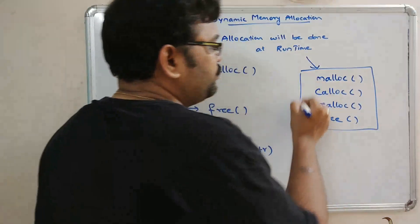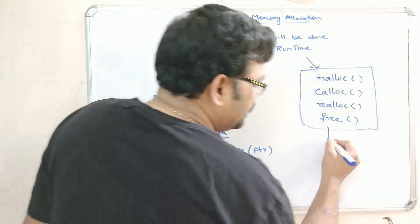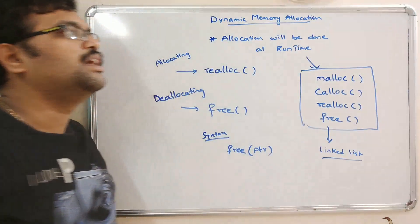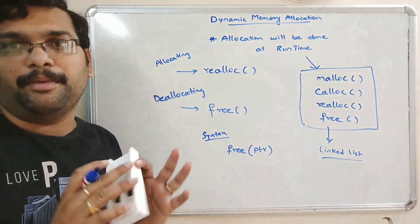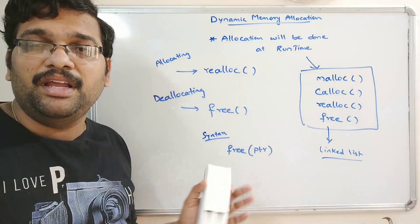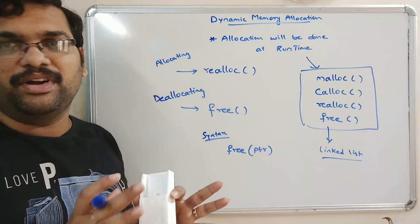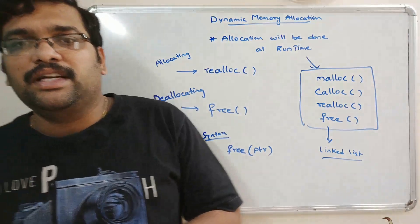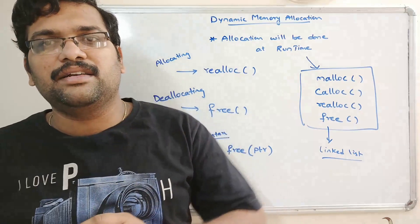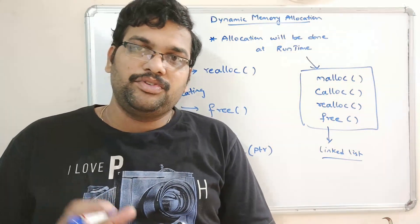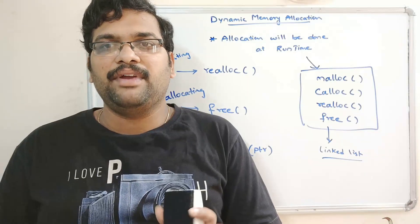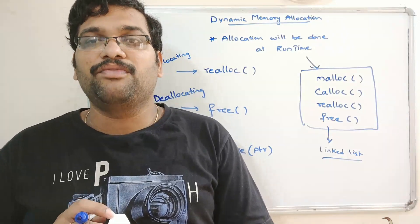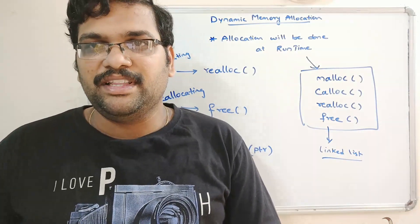These are the functions used in dynamic memory allocation. This is mainly used in data structures like linked lists in order to save memory — there is no wastage of memory and no chance of getting out-of-bounds exceptions. Hope you understood. If you have any doubts regarding dynamic memory allocation, feel free to post in the comment section. If you liked the session, share it with your friends and don't forget to subscribe to our channel. Thanks for watching!